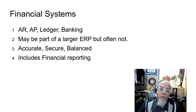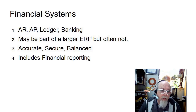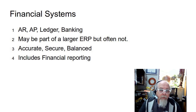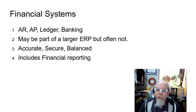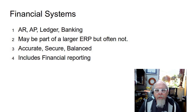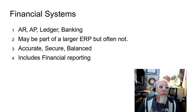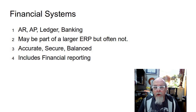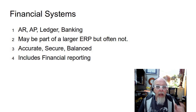Another very common software type in organizations is financial systems. Financial systems handle accounts receivable, accounts payable, general ledger, budgeting, banking, and all of that. In a large ERP system, financial systems would be one piece or a group of modules within the ERP. But in many organizations, these financial systems sit separately and aren't as integrated as an ERP. Systems like QuickBooks, FreshBooks, and Peachtree may be part of something larger but often are not. A financial system has to be accurate, secure, and always balance.